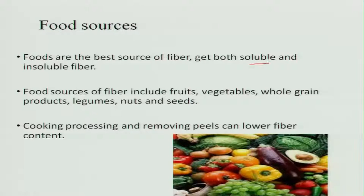Now, what are the food sources of fiber? Foods that are the best sources of fiber contain both soluble and insoluble fibers, including fruits and vegetables, whole grain cereals, legumes, nuts, and seeds. Cooking processes and removing peels — for example, peeling an apple before eating — can lower the fiber content of food. Fiber is very important in the diet and has a role in reducing many lifestyle disorders like cancer, constipation, heart disease, and diabetes, so let us include more fiber in our diet.